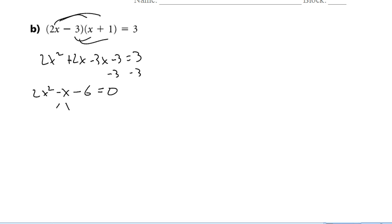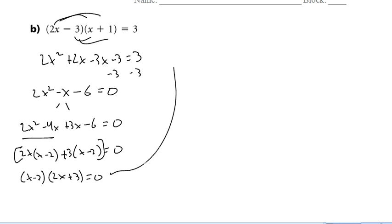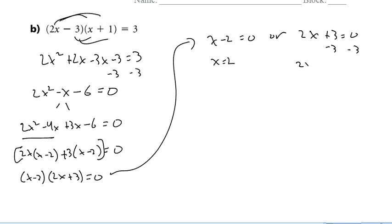Now I'll factor this. No common factor, so I'll use decomposition. I need two numbers that add to negative 1 and multiply to negative 6 — that's negative 4 and 3. Looking at the first group, I factor 2x out; from the second group I factor 3 out. Pulling out the common binomial x minus 2, I'm left with 2x plus 3. So either x minus 2 equals 0 giving x equals 2, or 2x plus 3 equals 0 giving x equals negative 3 over 2.